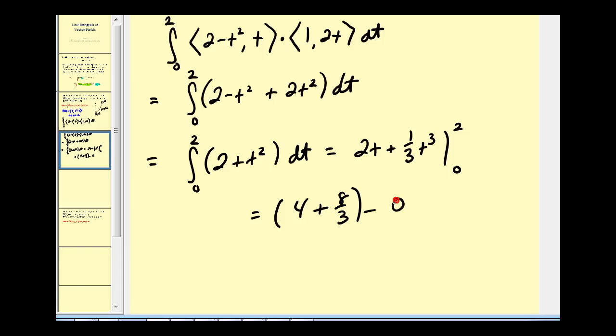When T is zero, these are both zero. Well four equals twelve thirds, so that'll be twenty thirds. So the work is twenty thirds.